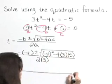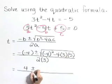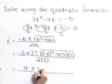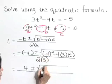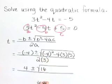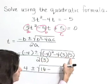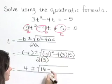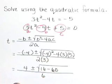Now let's simplify. The opposite of negative 4 is 4 plus or minus. Negative 4 quantity squared is 16 minus 4 times 3 is 12 times 5 is 60. So this becomes 16 minus 60, all over 6.